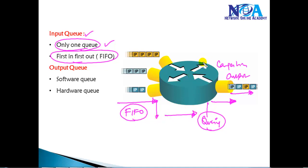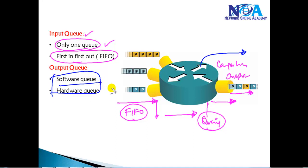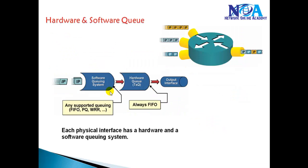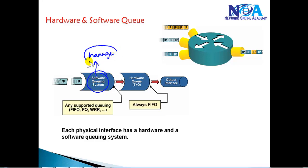The output queue, however, is something we can manage. Inside the output queue we have two different types: software queue and hardware queue. The software queue is something we can manage — we can arrange packets in different classifications and give them priority before they are placed on the hardware queue and sent out of the interface. The hardware queue, by contrast, we cannot manage.